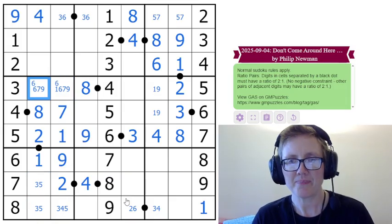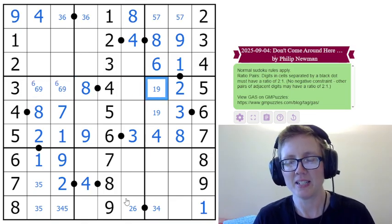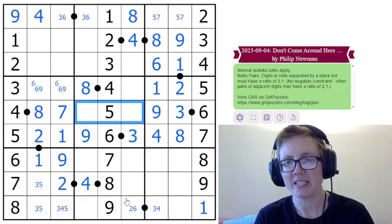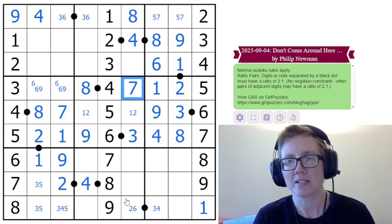And this, I can eliminate 1 and 7 from these cells. The 6, 9 pair there makes that a 1 and a 9. That's now going to be a 1 and a 2. That's going to be a 7.